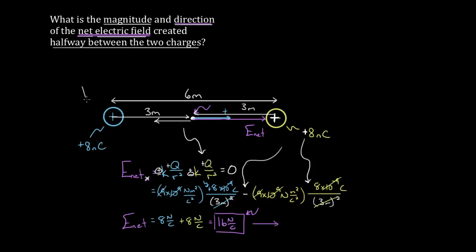To recap: to find the total electric field from multiple charges, draw the field each charge creates at the point of interest. Use the formula to get the magnitude of each contribution. Decide whether each contribution is positive or negative based on the direction the field points — not the sign of the charge. Add up all contributions to get the total electric field at that point.